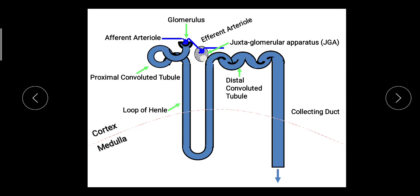Now we look at the anatomy and function of the nephron. The functional unit of the kidney is the nephron, where urine is formed. The nephron consists of two major anatomical parts: the glomerulus and the tubules. The glomerulus is closed and cup-shaped, and is known as Bowman's capsule.